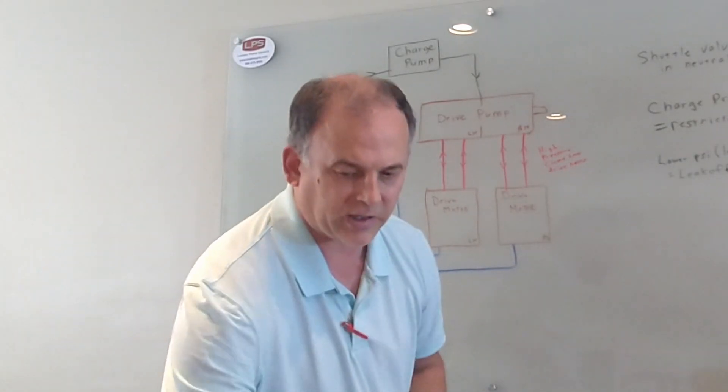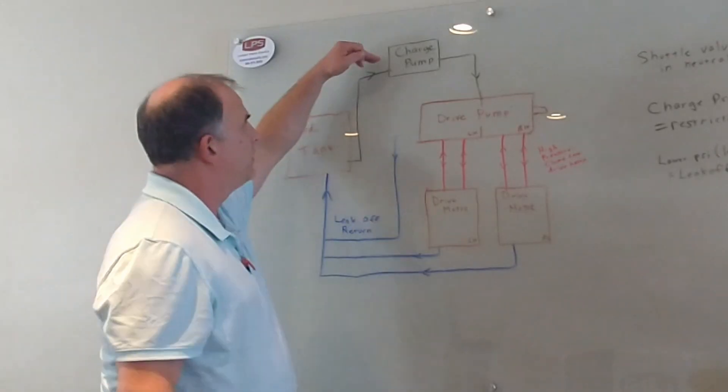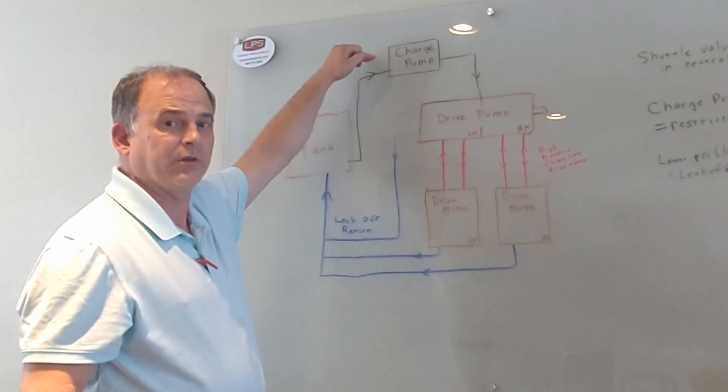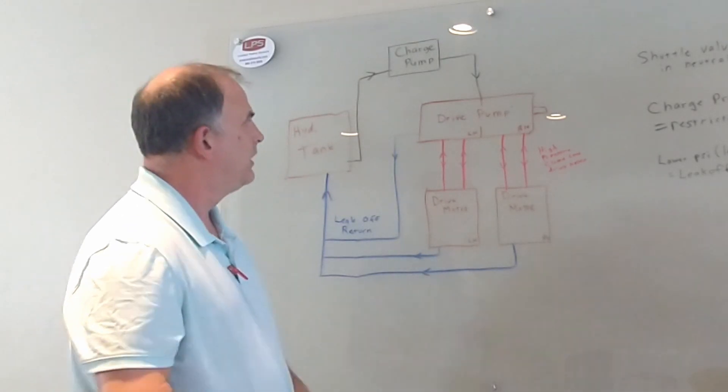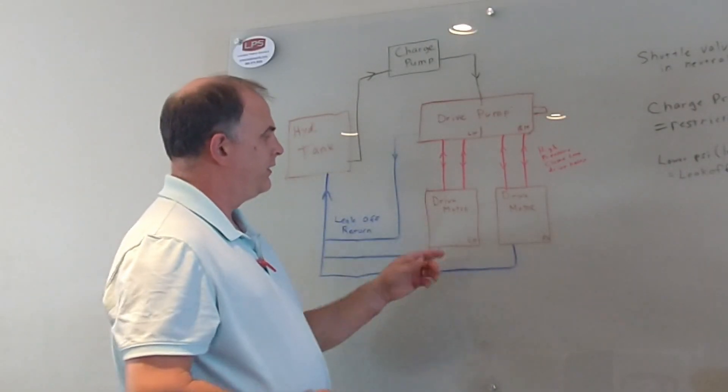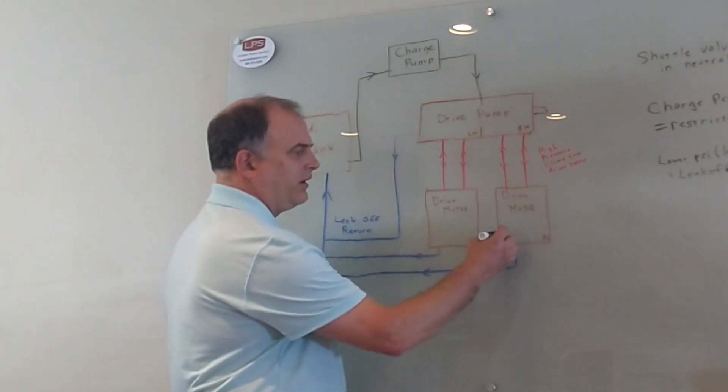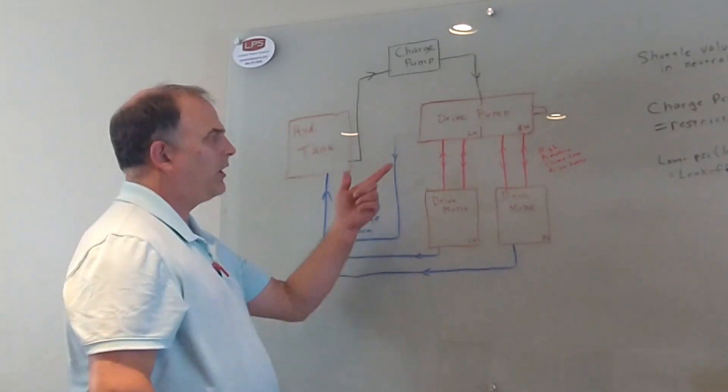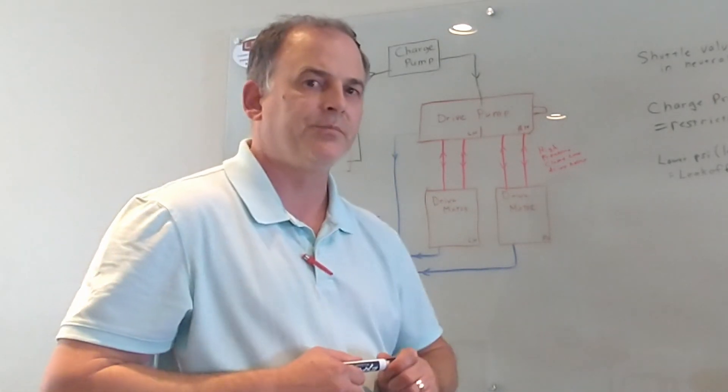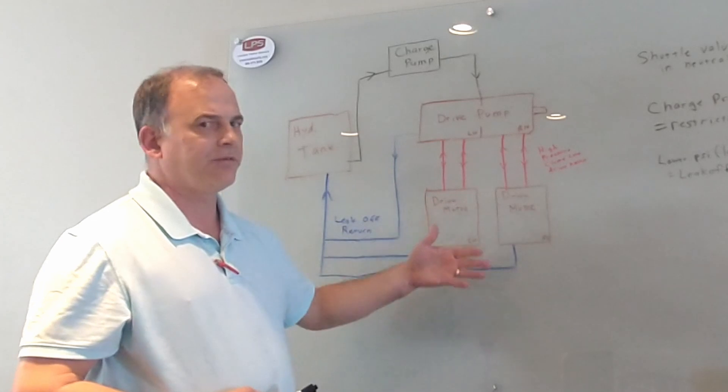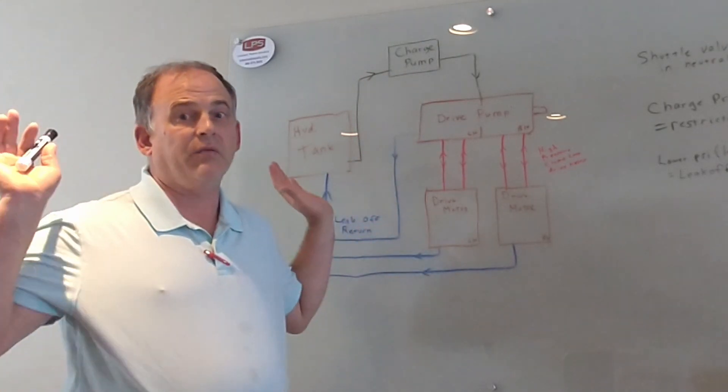But it does drop a lot when the RPM drops. And that's because when the RPM drops, the charge pump's turning slower and is pumping less oil out. So when you have a system where this motor on a lot of machines will leak from one to one and a half gallons, this one will leak one to one and a half gallons, the pump will leak three gallons under full load - so there you have a combined six gallons of leak-off under operation. If the pump's putting out seven gallons, everything's good, the relief valve's open, everything's good.